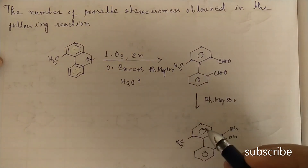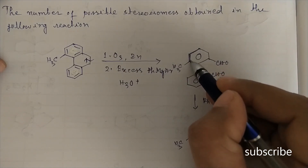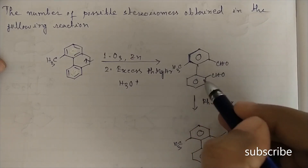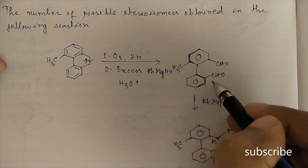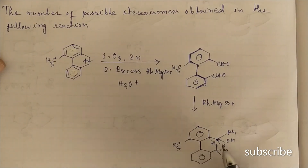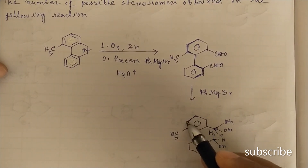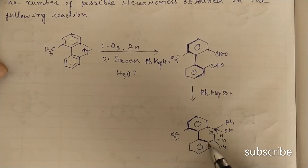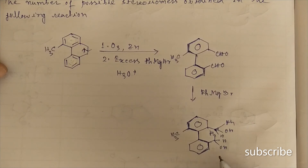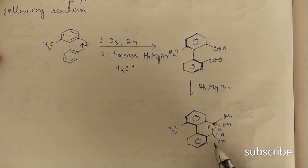This compound will show atropisomerism. Atropisomerism is the isomerism that arises due to restricted rotation about a sigma bond. This whole compound does not remain in the same plane, and rotation about this sigma bond is restricted. Atropisomerism can show optical activity if there is no plane of symmetry in the compound.